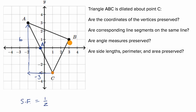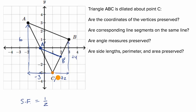Now where would B prime be? To go from C to B, we go two to the right and four up. With a scale factor of one half, we go one to the right and two up — so this is B prime. And C maps to C prime because it's the point we're dilating about. So the image is A prime, B prime, and C prime.